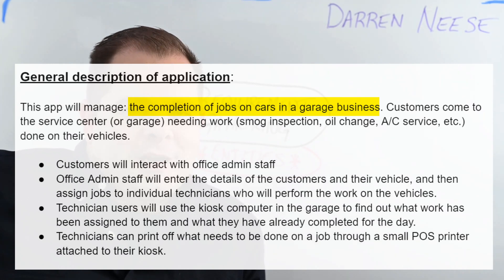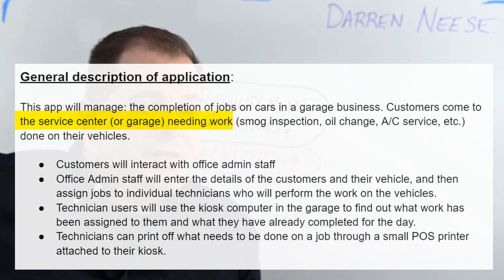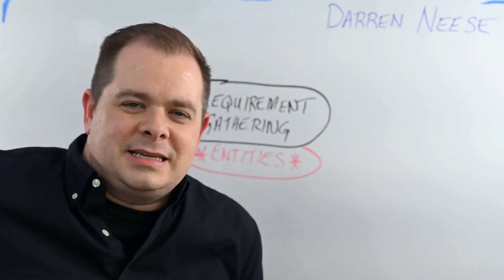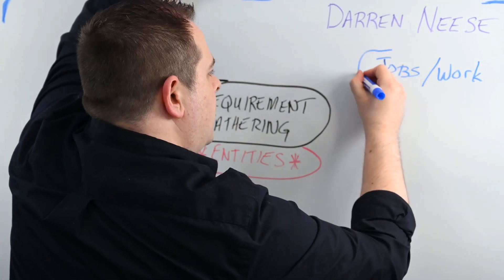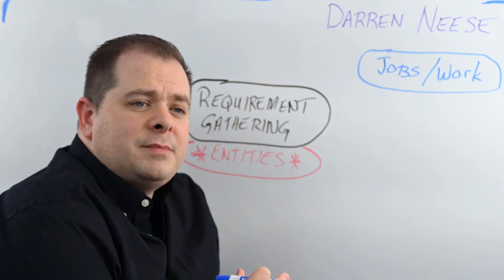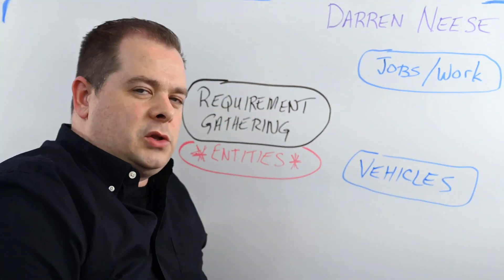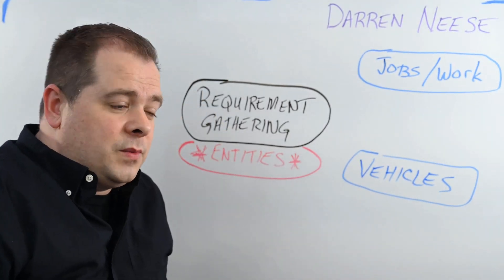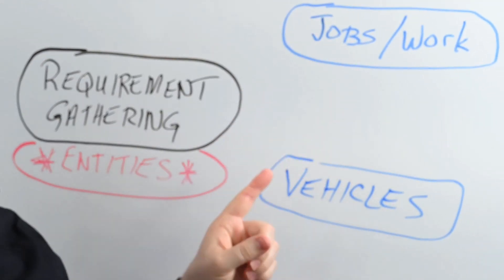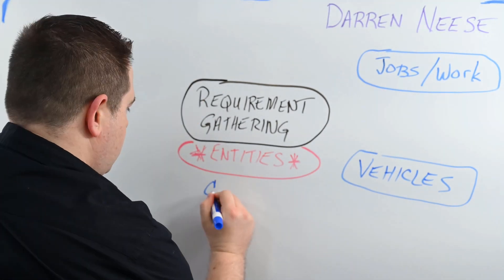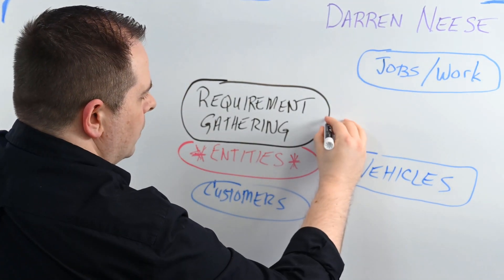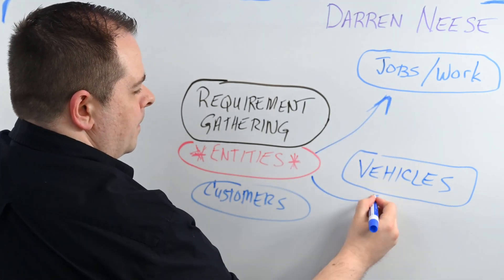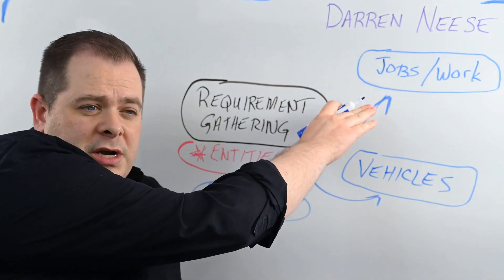The completion of jobs on cars in a garage business. Customers come to the service center or garage needing work—smog inspection, oil change, AC service, etc.—done on their vehicles. So let's identify all the entities mentioned, paying close attention to any usage of nouns. The first thing identified was jobs or work. This app will manage the completion of jobs on cars. Let's put down vehicles or cars—I don't want to exclude things like vans and trucks. We also have customers.